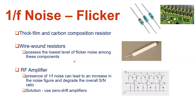Passive components also exhibit flicker noise. Thick-film resistors, carbon composition resistors, surface-mount resistors, and wire-wound resistors all show flicker noise effects. The wire-wound resistor possesses the lowest level of flicker noise among these components, so if flicker noise dominance is unwanted in your application, wire-wound resistors are recommended. For example, in an RF amplifier circuit, having one-over-f noise can increase the noise figure and degrade the overall signal-to-noise ratio of the amplifier.